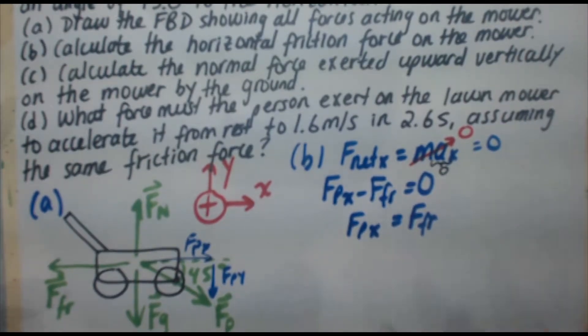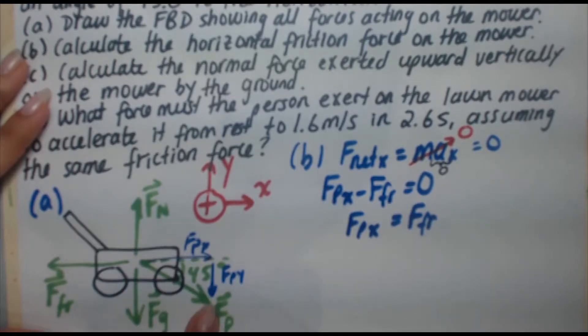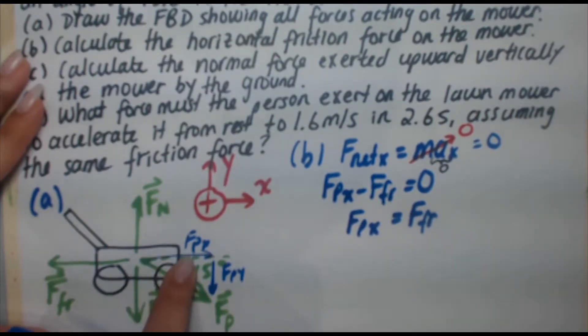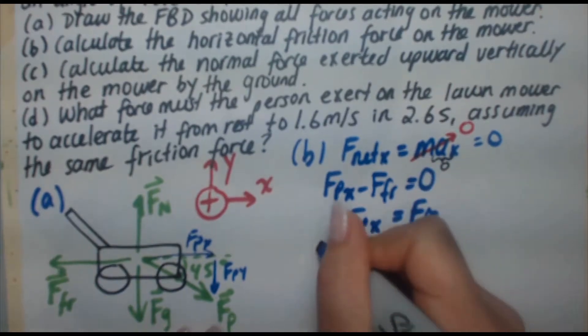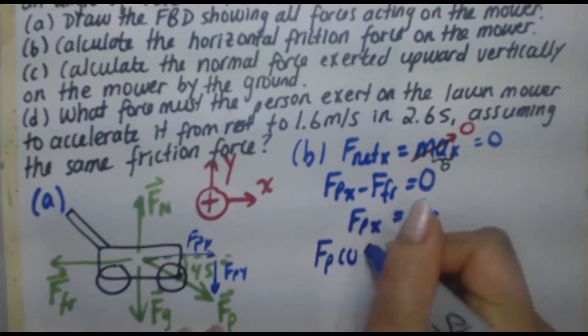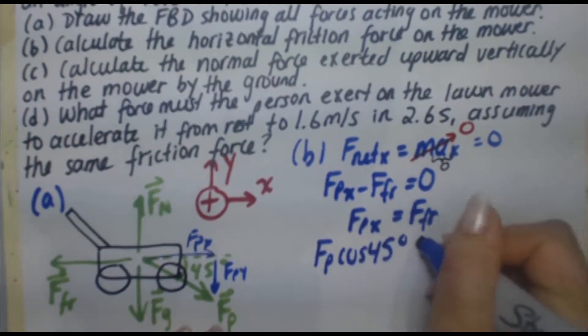FPx is one component of this original vector FP, right? It's actually the adjacent to the angle 45 degrees, which we've been given, which represents cosine from SOHCAHTOA. So FPx is, in fact, FP cosine 45 degrees.